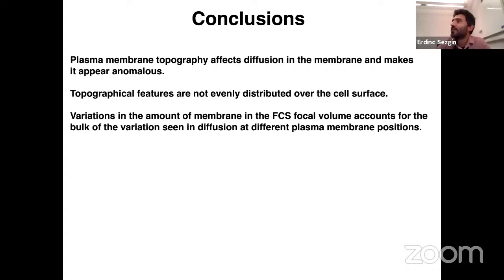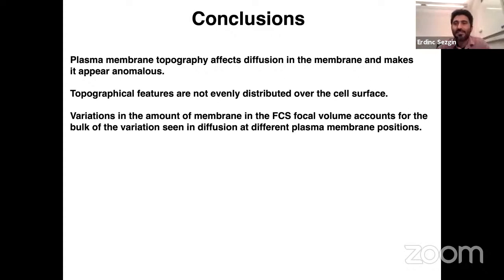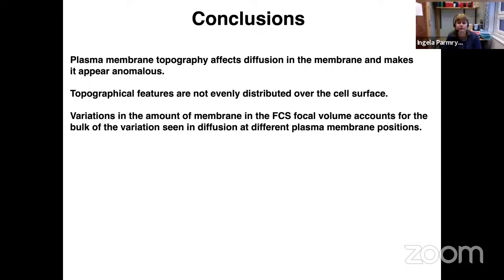A question about temperature: could possible changes in temperature change molecular topography and thereby the diffusion coefficient? Yes — if you take cells to very cold temperatures, around zero degrees, cells round up and become less active in forming protrusions. Temperature does affect this. Our studies were performed at room temperature. Also, when you fix cells, everything becomes flatter — the bottom side definitely flattens, and the top side will also collapse somewhat because the large water-filled space collapses down onto the nearest cytoskeletal feature.